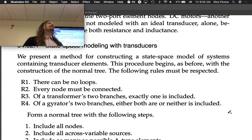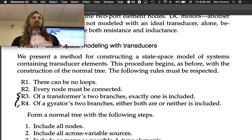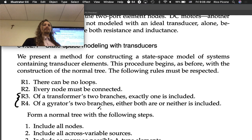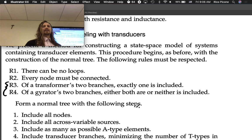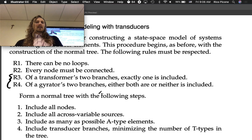Remember how there used to be two rules? There can be no loops, and every node must be connected. Those were the two rules before. Now we've got rules three and four. Rule 3: Of a transformer's two branches, exactly one is included. Rule 4: Of a gyrator's two branches, either both or neither is included. You have to either have both of them with the gyrator or neither of them with the gyrator.